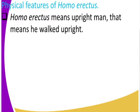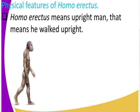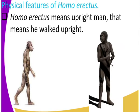Homo erectus means upright man, which means that man walked upright. That is the first feature of Homo erectus — you can see how upright man was. He walked upright, not like those other stages where they walked in quadrupedal movement or sometimes could walk and fall. Homo is man, erectus is upright — Homo erectus, upright man.